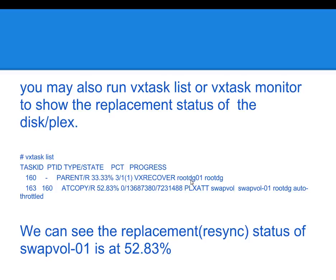In this example using VxTask, it's showing you the parent disk rootDG01 is in recovery status and is at 33%. The plex that it's working on at this time is swapVol01, and the syncing of the new plex is at 52%. If you continue to type this command, you'll see that it's going to move on to rootVol and also homeVol, so on and so forth.